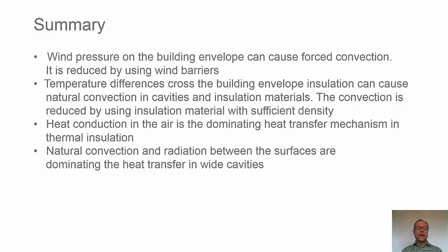So then the summary. Wind pressure on the building envelope can cause forced convection. It is reduced by using wind barriers. Temperature differences across the building envelope insulation can cause natural convection in cavities and insulation materials. The convection is reduced by using insulation materials with sufficient density. Heat conduction in the air is the dominating heat transfer mechanism in thermal insulation. Natural convection and radiation between the surfaces are dominating the heat transfer in wide cavities.